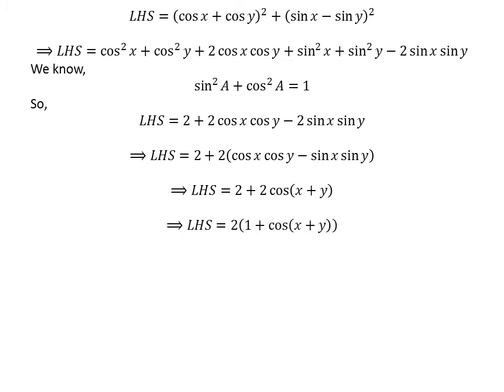Taking the common factor 2 out in the above equation, we get the left-hand side of the equation is equal to 2 times the quantity 1 plus cosine of x plus y.